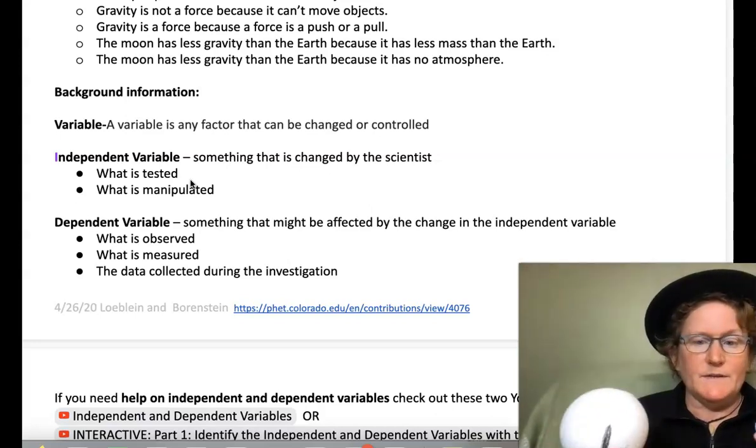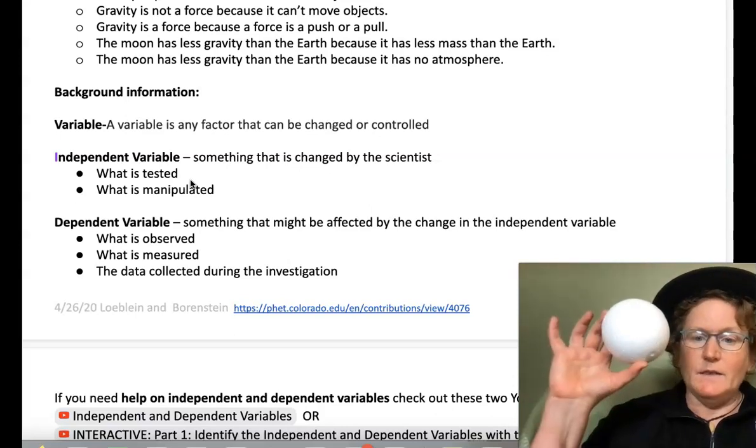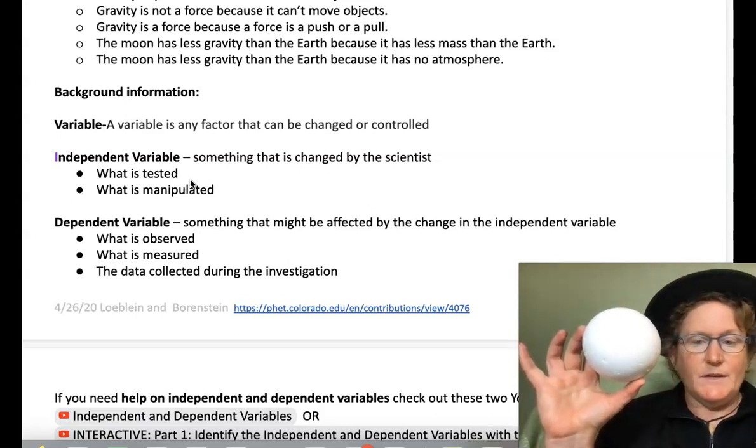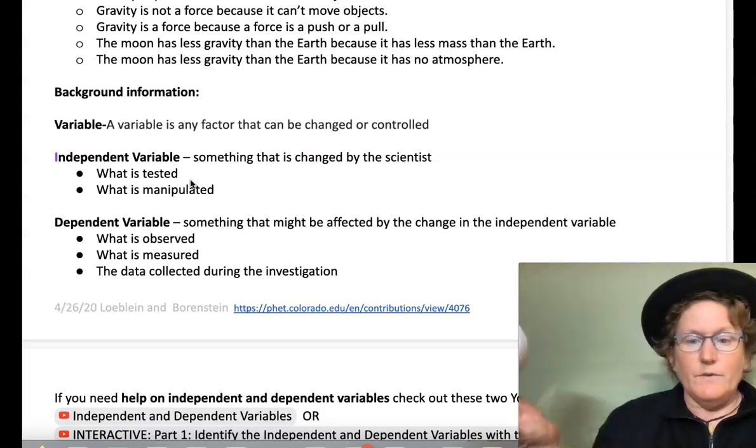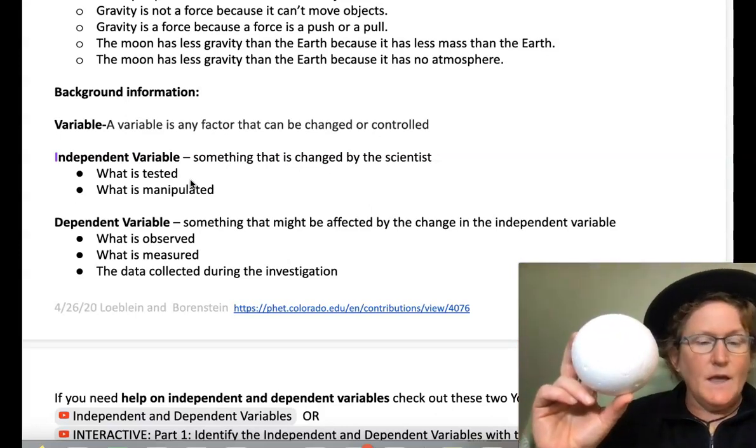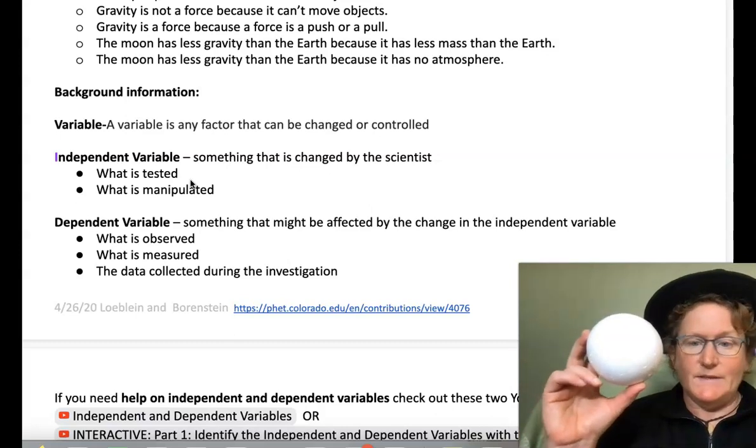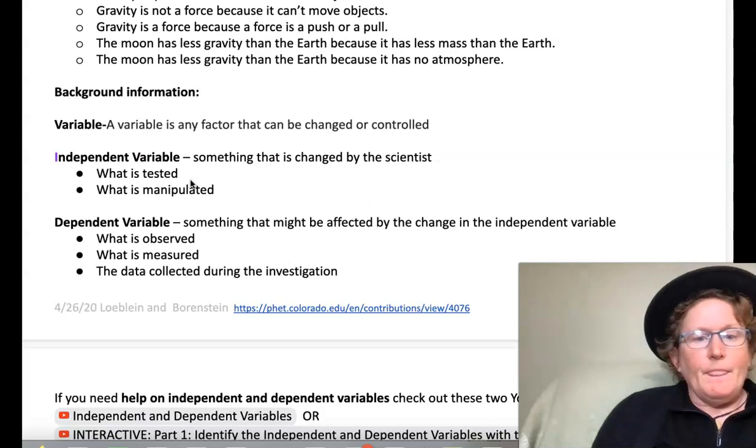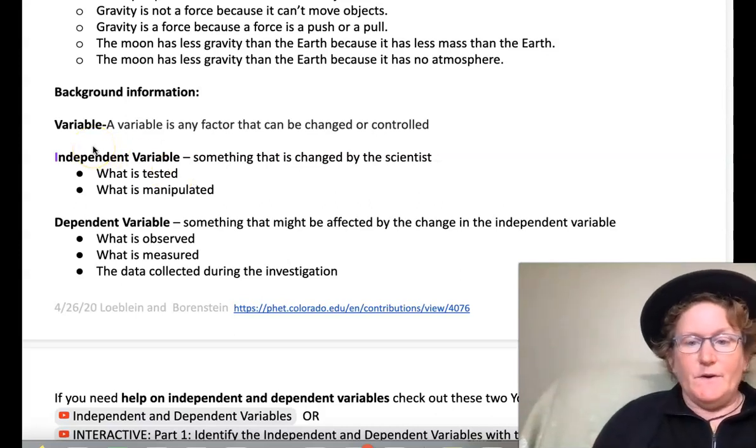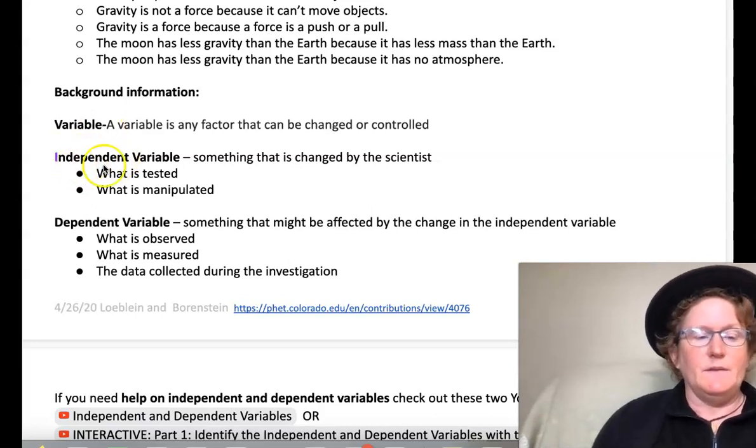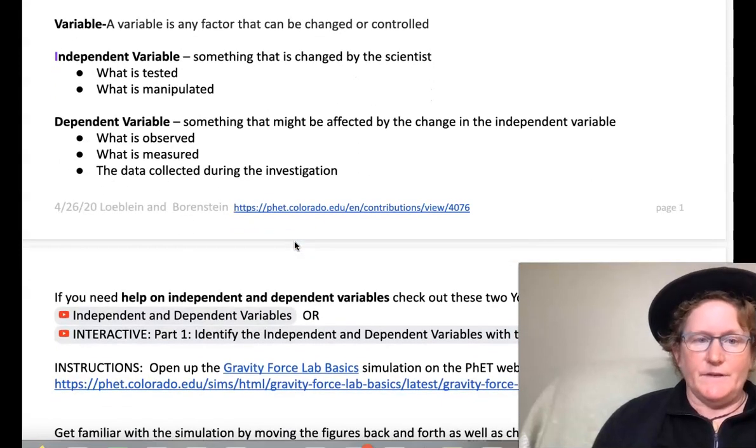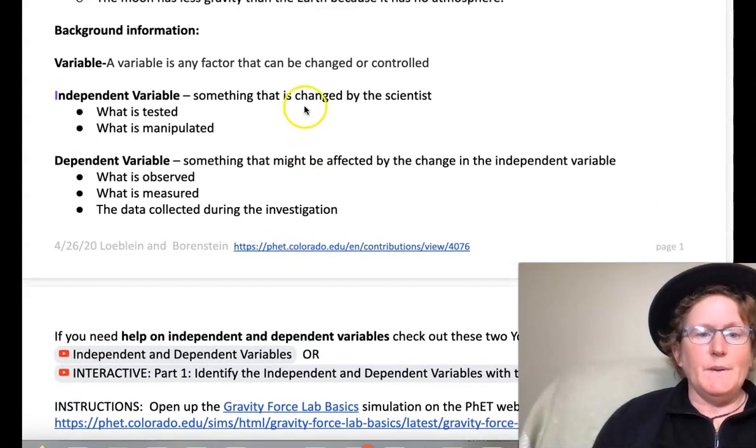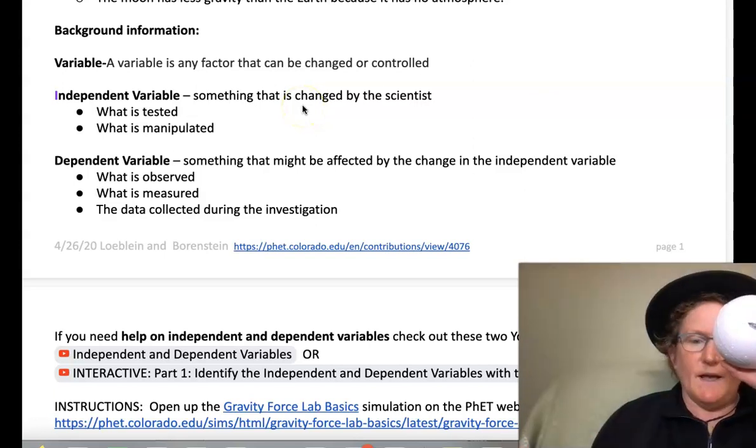And we're assuming in this lab that a large object and a small object have different masses, although they could have the same mass if they had different densities. But we're assuming that everything has the same density in the simulation. The dependent variable is what changes depending on what you decide to be the independent variable. So the dependent variable here would be gravity. The independent variables are distance or size.